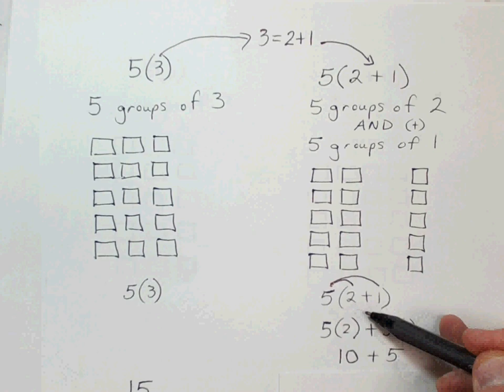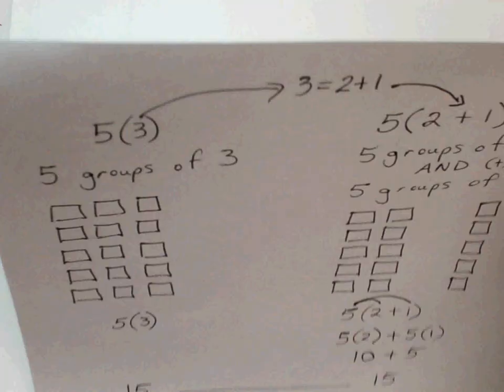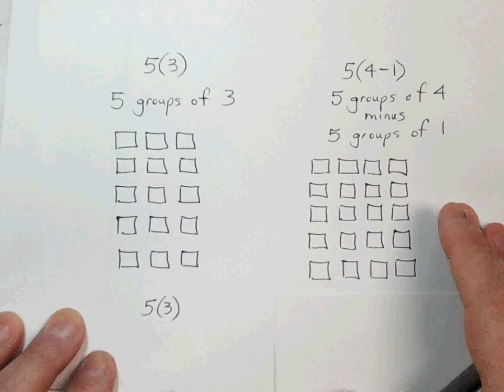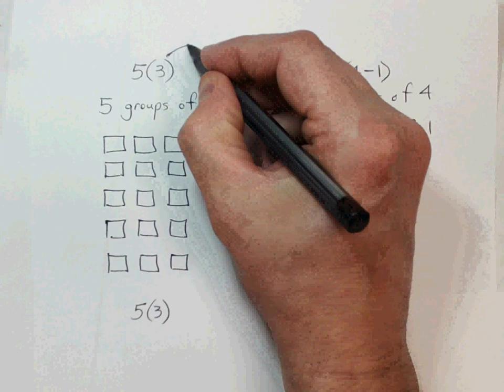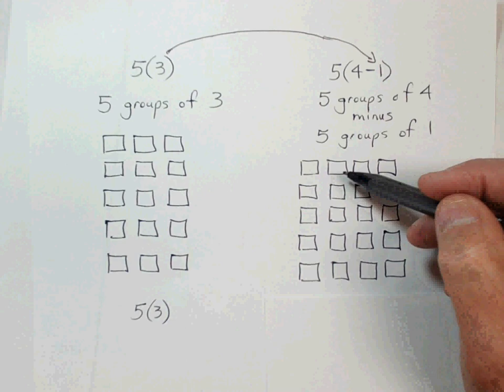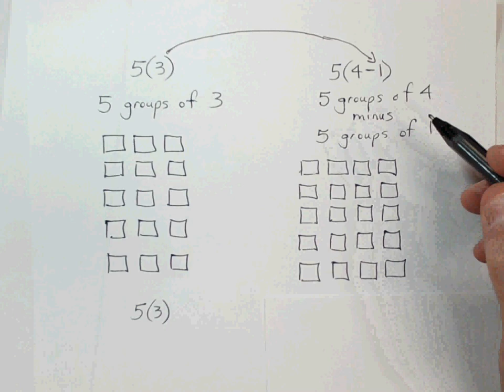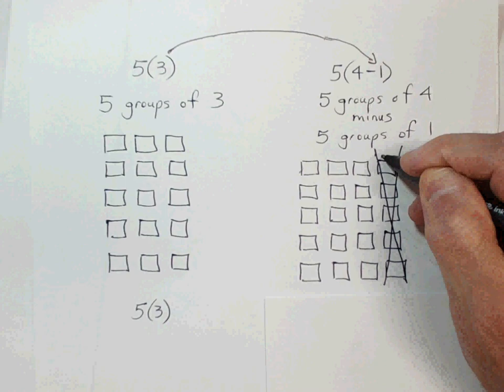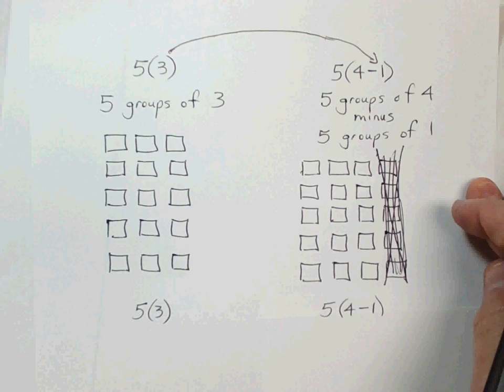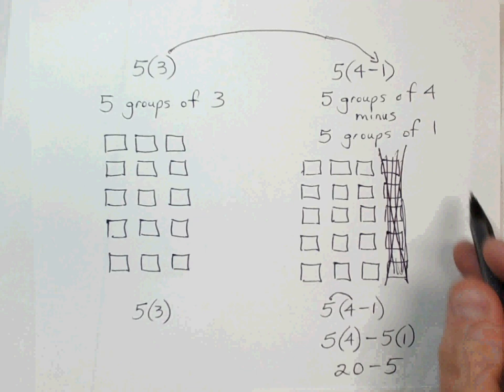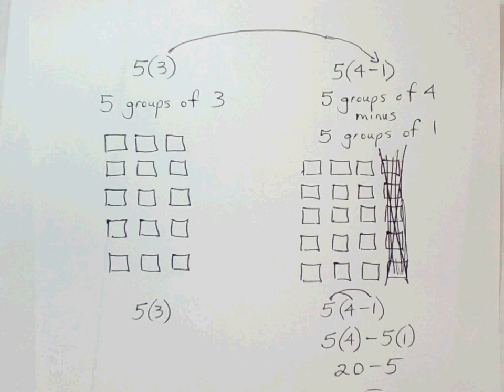We can do the same thing but illustrate that we can also have a group with subtraction. Five times three is still fifteen, but I rewrite three as four minus one. So I have five times four which is twenty, then I take away five times one which is five. Twenty minus five still gives me fifteen. That's the distributive property with subtraction.